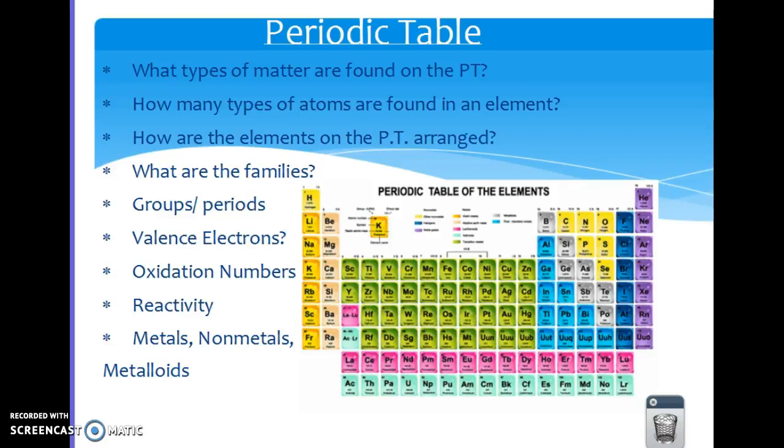What types of matter are there? How are they arranged? What's a family? What's a group? What's a period? How can you tell how many valence electrons are there? What's the reactivity like for each one of these? And then how are elements arranged as metals, nonmetals, and metalloids?